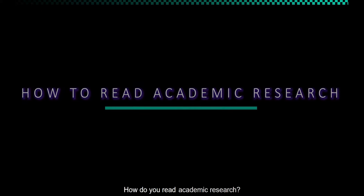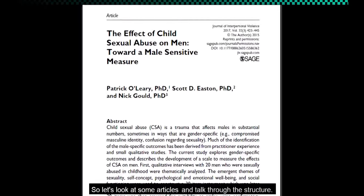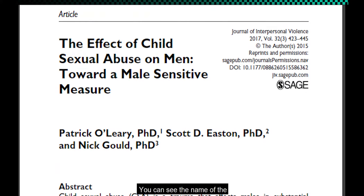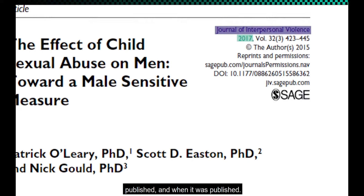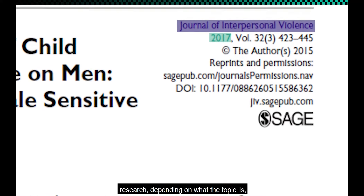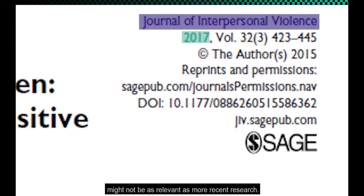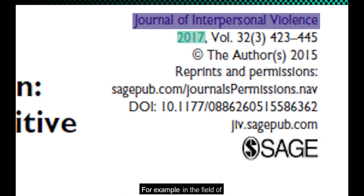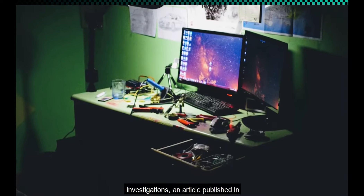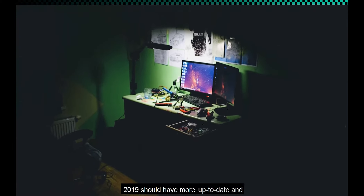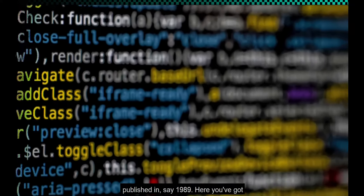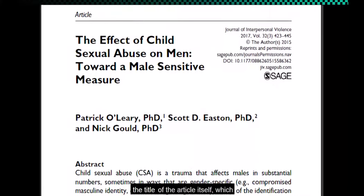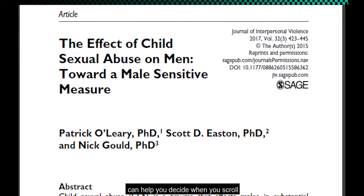How do you read academic research? Let's look at some articles and talk through the structure. You can see the name of the publication in which the article was published and when it was published. The date can be quite important, as older research, depending on what the topic is, might not be as relevant as more recent research. For example, in the field of forensics or digital media investigations, an article published in 2019 should have more up-to-date and correct information than an article published in, say, 1989. Here you have the title of the article itself, which can help you decide, when you scroll through a list of articles, whether it is relevant to what you are looking for.